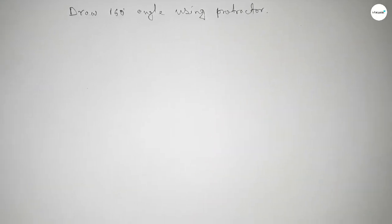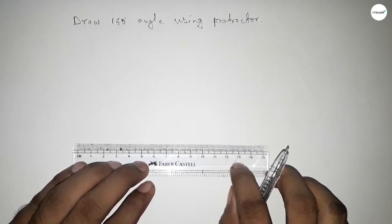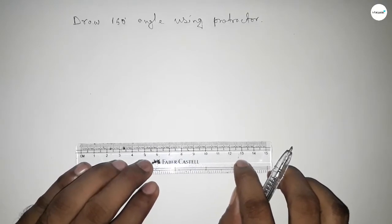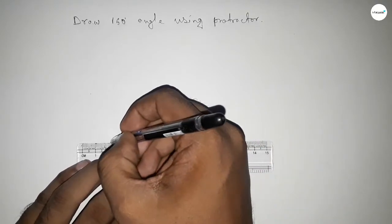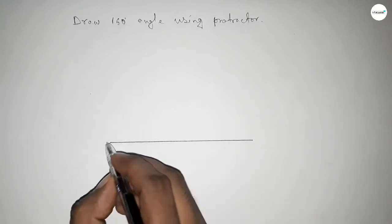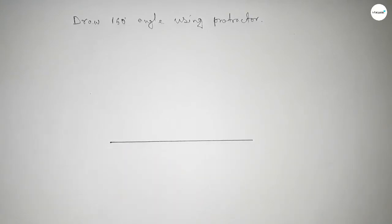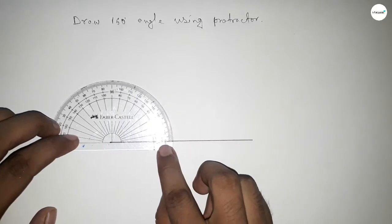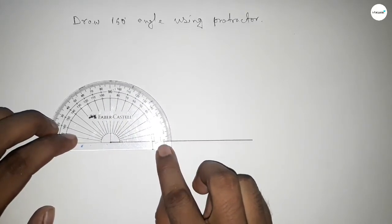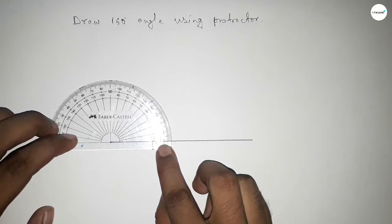Let's start. First, draw a line of any length. After drawing the line, mark the point where you'll draw the 160-degree angle, then place the protractor on the line perfectly.